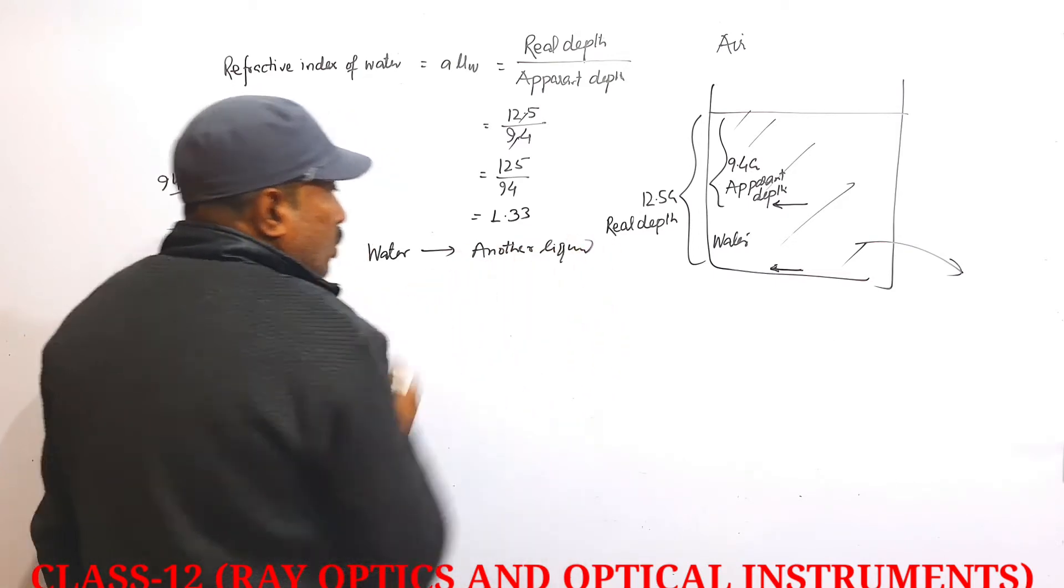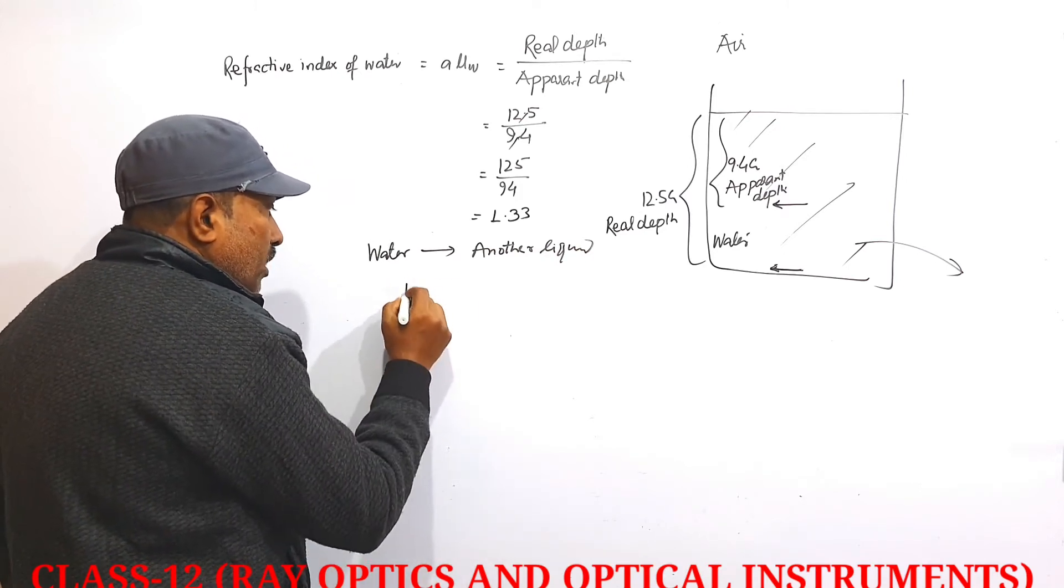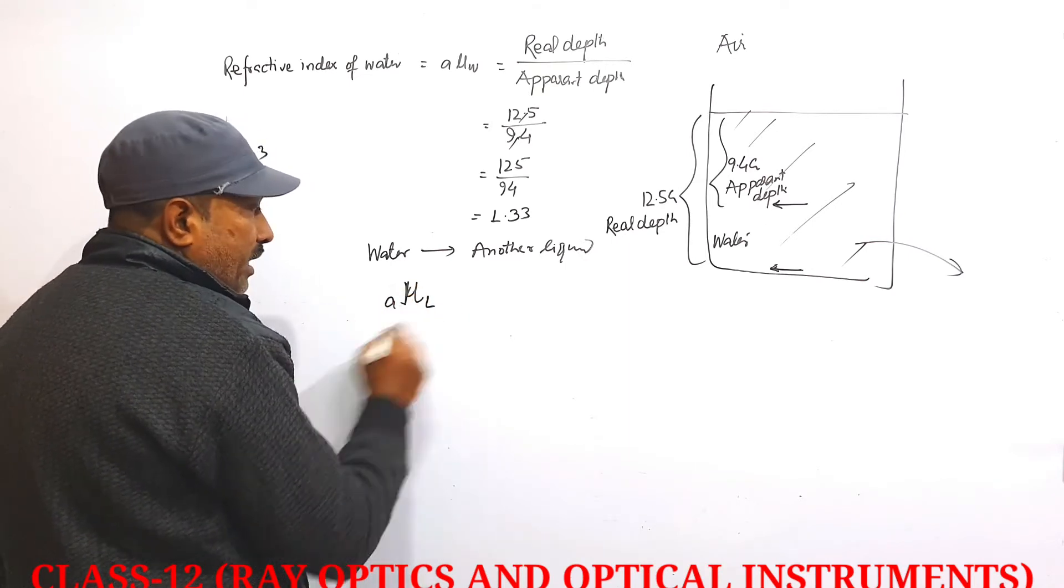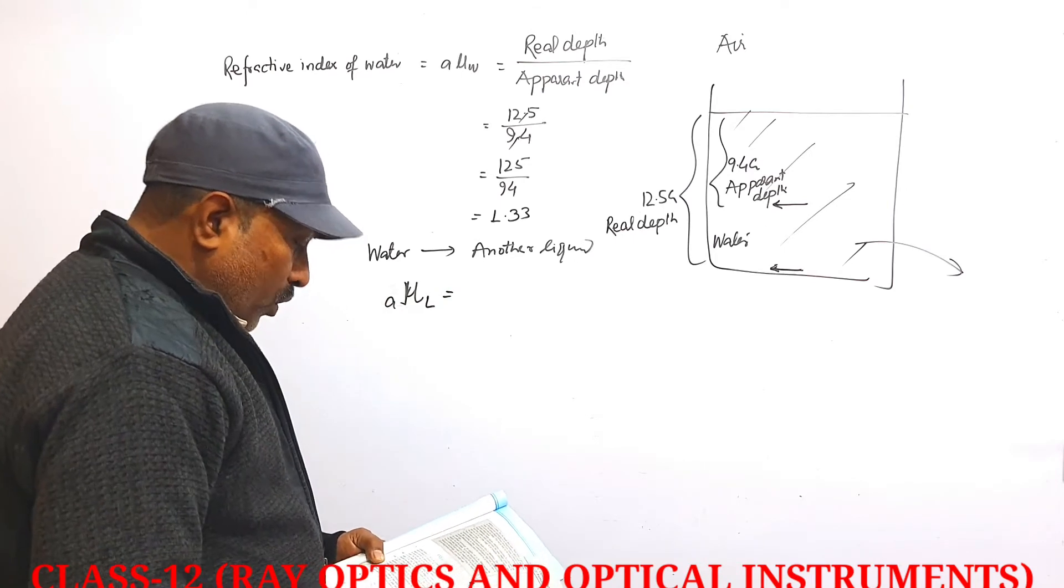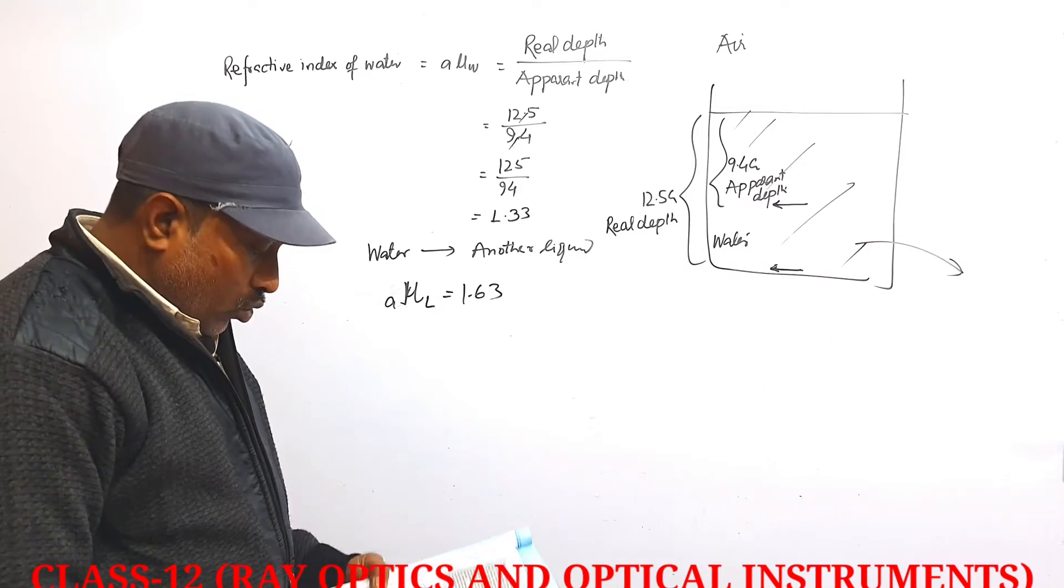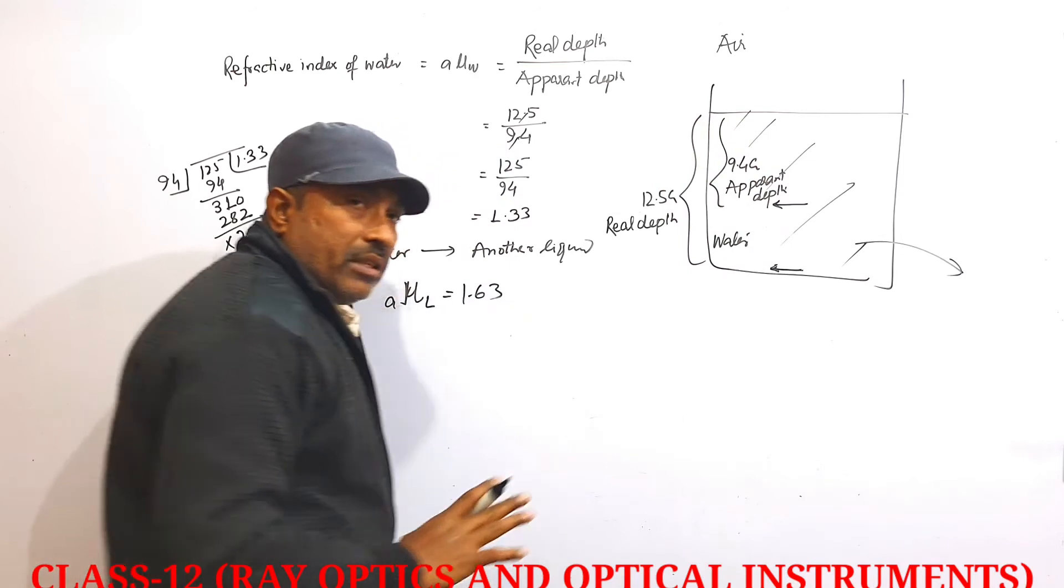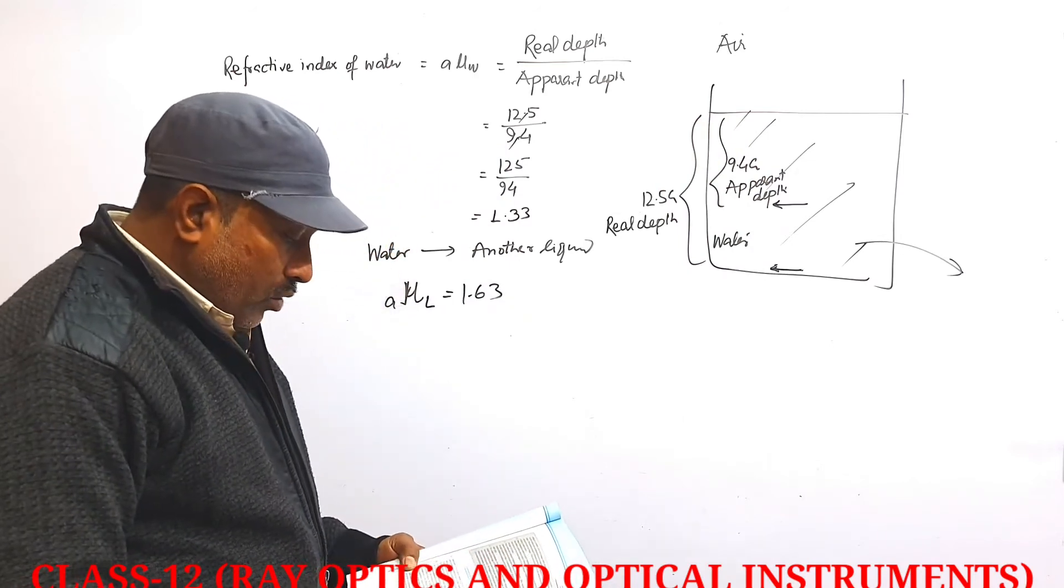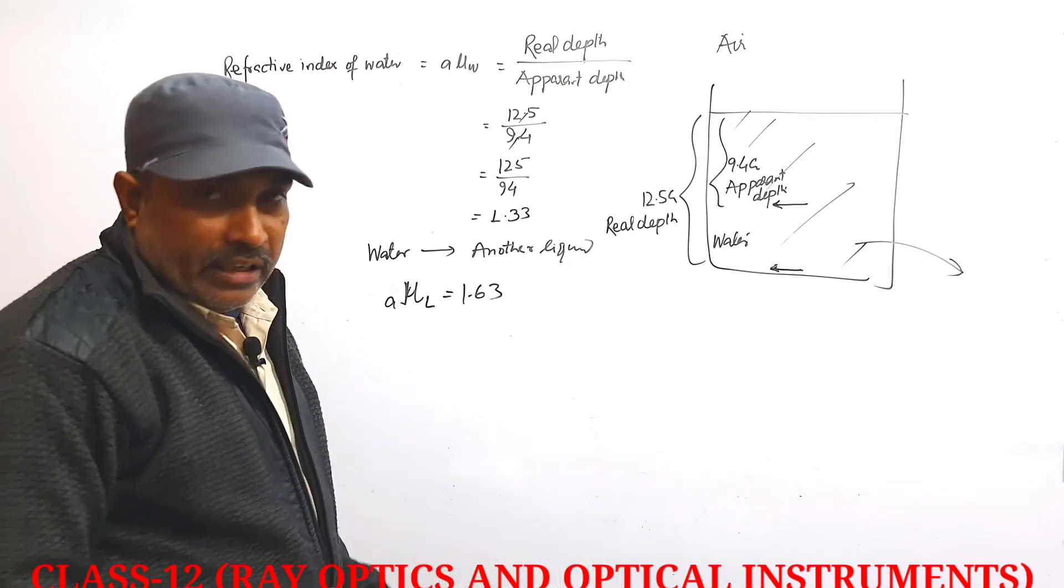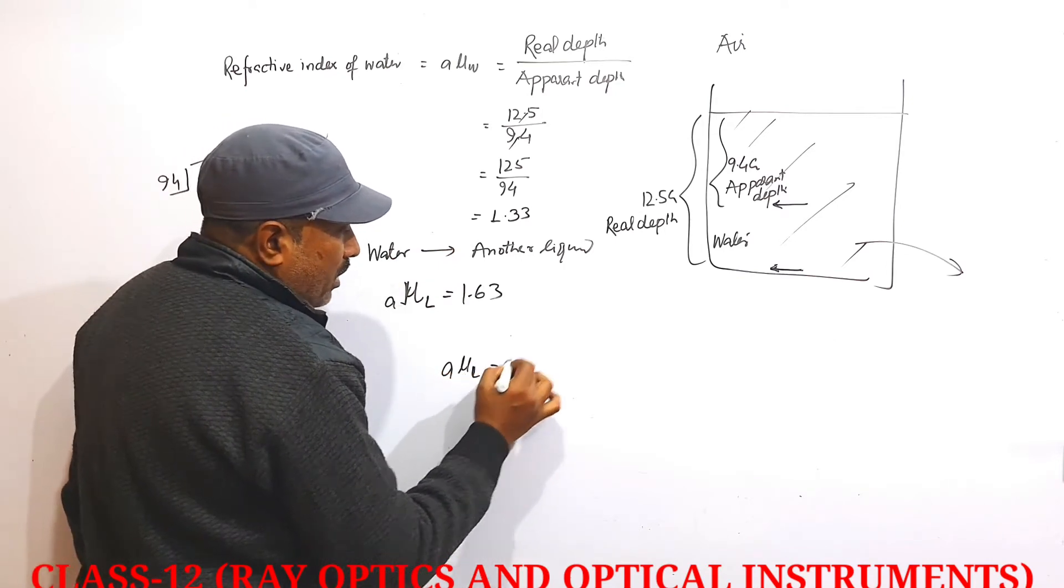The refractive index of that liquid will be with respect to air, and its value is given as 1.63. This material has refractive index 1.63, filled to height 12.5 centimeters. The question asks: by what distance would the microscope have to be moved to refocus on the needle again?